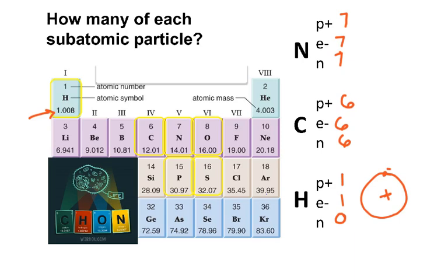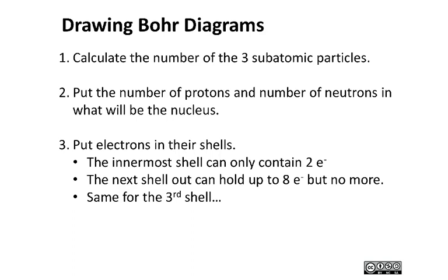You definitely need to be able to do this for your quiz, the exam, post lab — you name it. Now we're going to practice using that information from the periodic table to figure out how to draw Bohr diagrams. Do yourself a favor: if you're not used to doing this, follow this process. First, use the periodic table to figure out the number of the three subatomic particles. Then put the number of protons and the number of neutrons in the nucleus, and then draw electron shells. The innermost shell can only hold two electrons. The next shell out can hold up to eight — no more, due to electrostatic repulsion. The third shell can hold up to eight.